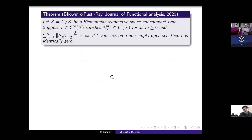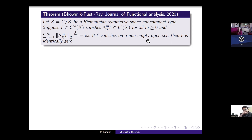In 2020, Bhomik, Pusti, and Ray initiated the study of Chernoff-type theorems on Riemannian symmetric spaces and proved: if X is a Riemannian symmetric space of non-compact type, F is a smooth function such that all powers of the Laplace-Beltrami operator applied to F are in L^2, and this operator satisfies the Carleman condition, then if F vanishes on a non-empty open set, then F is identically zero. Here, the vanishing condition is stronger, so the result is weaker, but still interesting because we have a class of functions completely determined by their values on a smaller region.